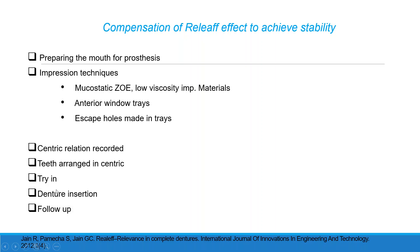During occlusion, the mucosa under the maxillary denture is displaced in the superior direction and the mucosa under the mandibular denture is displaced in the inferior direction, resulting in premature contact of the distal incline of the mandibular posterior cusp to the mesial incline of the maxillary cusp. Therefore, selective grinding should be done. At denture insertion, follow-up is needed to avoid hyperplasia by reducing overextended flanges or completely removing them. Hyperplastic tissue can be managed by massage with the ball of the finger.